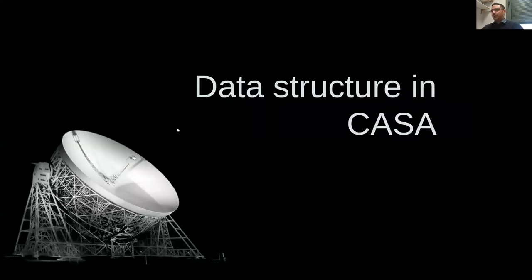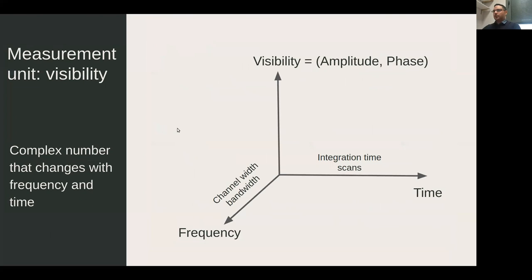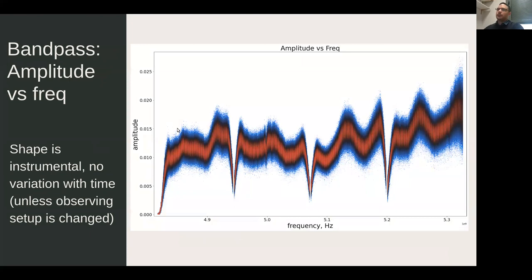I will do a quick review of data structure in CASA — it's always important to visualize and understand how your data looks. Visibilities are complex numbers with amplitude and phase that can change with time and frequency. For example, a plot of amplitude against frequency shows clearly the bandpass shape, which is instrumental and should not vary with time. Since you've already calibrated the bandpass in the original calibration, you won't calibrate it further during self-calibration.